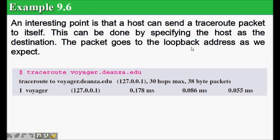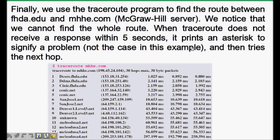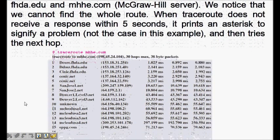Traceroute can also be run to yourself. One important point: many routers, especially inside autonomous systems and ISPs, do not generate ICMP messages because they don't want to reveal their IP addresses. For those routers, traceroute displays a star, indicating the IP address of that particular router is unknown.